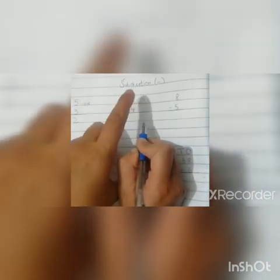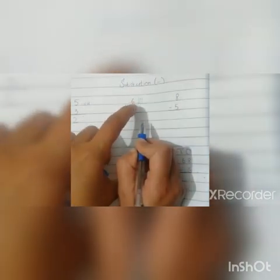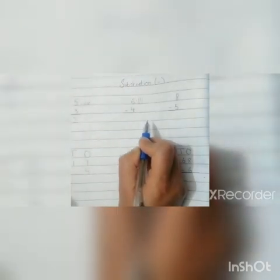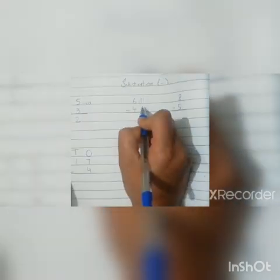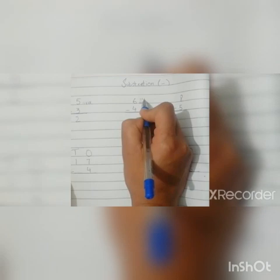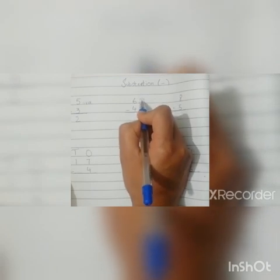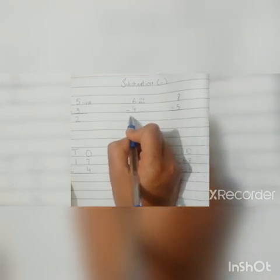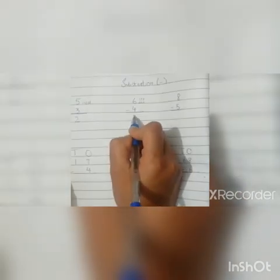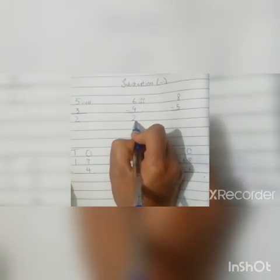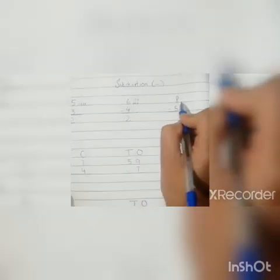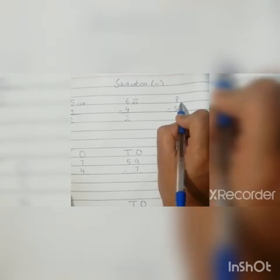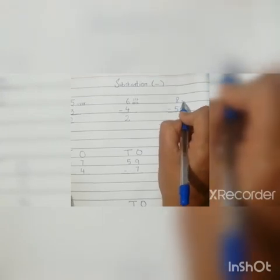We are going to cross off four lines: one, two, three, four. How many lines are left? One, two — the answer is two.